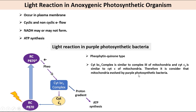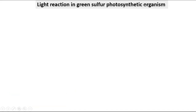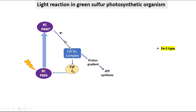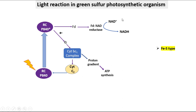Green sulfur bacteria are anoxygenic photosynthetic bacteria with two routes for electrons driven by excitation of P840. A cyclic route goes through quinone to the cytochrome BC1 complex and back to the reaction center via cytochrome C. A non-cyclic route goes from the reaction center through iron-sulfur protein ferredoxin, then to NAD in a reaction catalyzed by ferredoxin-NAD reductase.